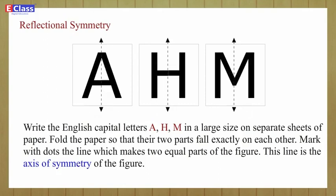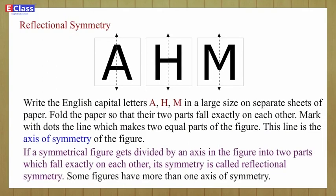This line is the axis of symmetry of the figure. If a symmetrical figure gets divided by an axis in the figure into two parts which fall exactly on each other, its symmetry is called Reflectional Symmetry. Some figures have more than one axis of symmetry.